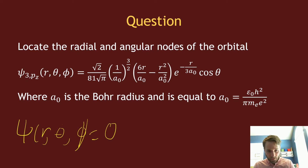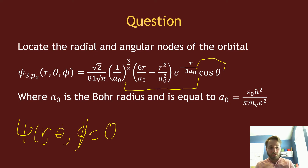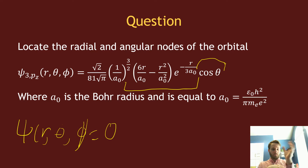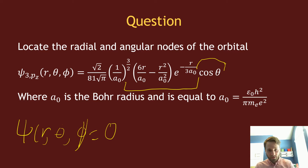We can note that our wave function has a radial part and an angular part, and I can split those up. To find radial nodes I just look at the radial part of the function, and for angular nodes I just look at the angular part. It doesn't really matter what the constants out front are, because we're looking at when the wave function equals zero — multiplying by constants still gives zero — so we can ignore those constants.